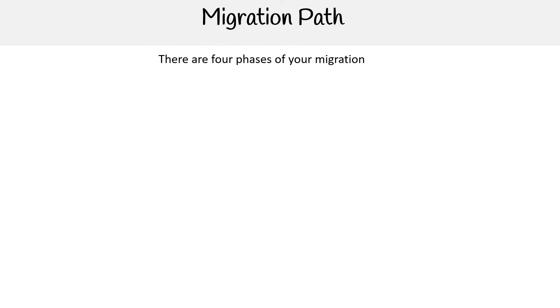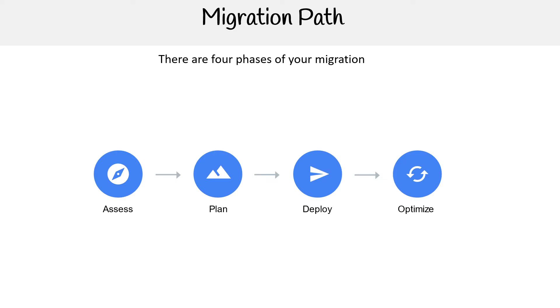So there are four phases of your migration: there's Assess, Plan, Deploy, and Optimize. This is going to be text heavy, but we'll work our way through it and you'll leave with some knowledge.